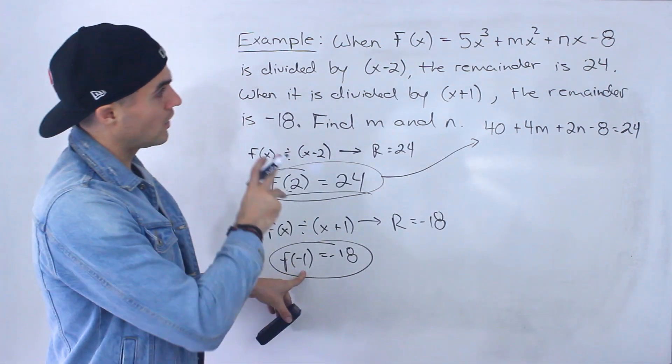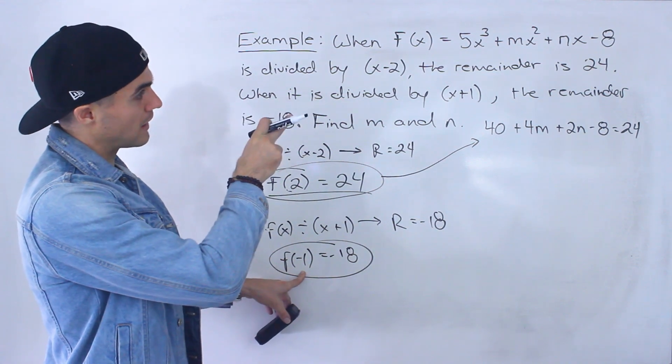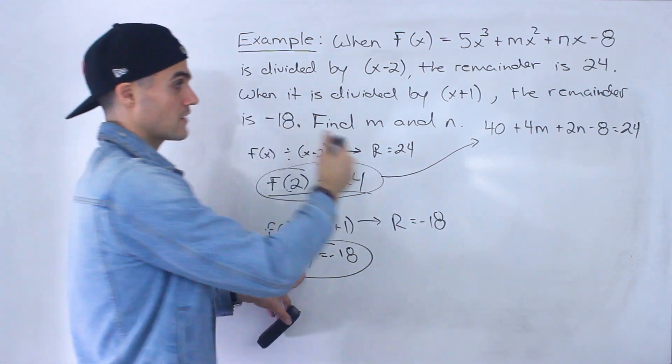And then this here, we would plug in negative 1 for all of the x's. So negative 1 to the power of 3 is negative 1 times 5 is negative 5.